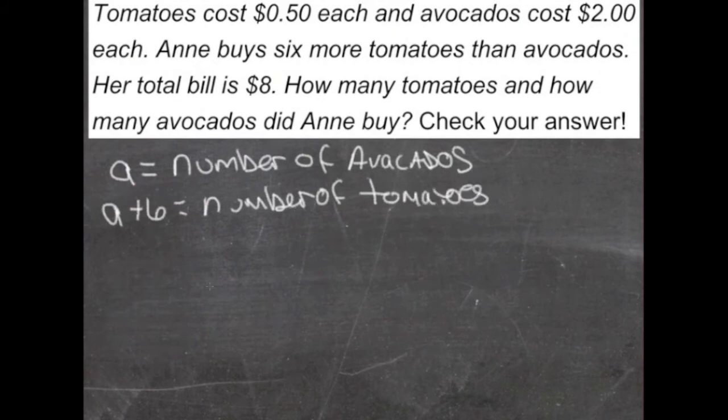And that means then that if we were to take the number of each fruit that we bought, multiply it by their price, we could come up with the total price. So if tomatoes are 50 cents each, we're going to take 0.5, or 50 cents, times a plus 6, which is our number of tomatoes.